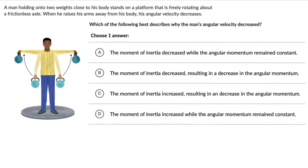Let's solve a couple of questions on conservation of angular momentum. For the first one, we have a man holding two weights close to his body and he's standing on a platform that is freely rotating about a frictionless axle. When he raises his arms away from his body, his angular velocity decreases. Which of the following best describes why the man's angular velocity decreased? Pause the video and think through this question on your own first.